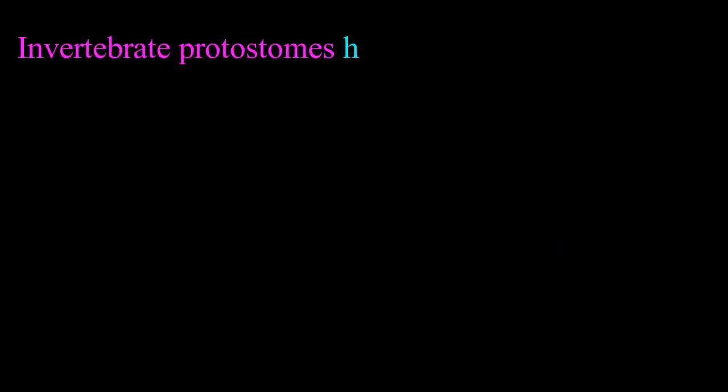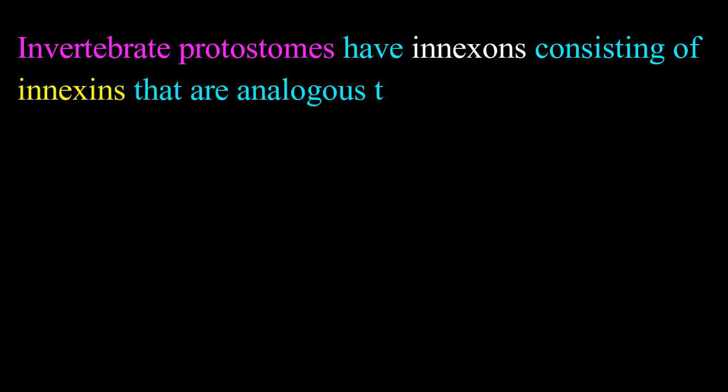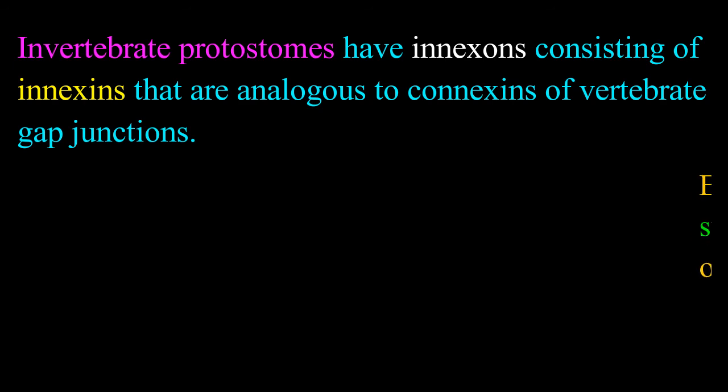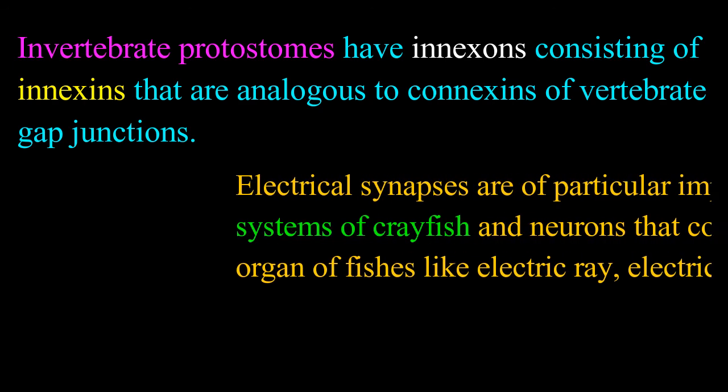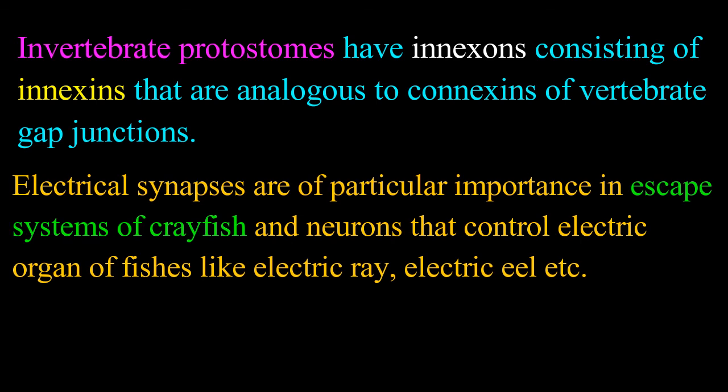Invertebrate protostomes have innexons consisting of innexins that are analogous to connexins of vertebrate gap junctions. Electrical synapses are of particular importance in escape systems of crayfish and neurons that control electric organ of fishes like electric ray, etc.